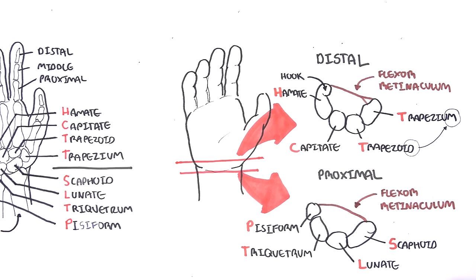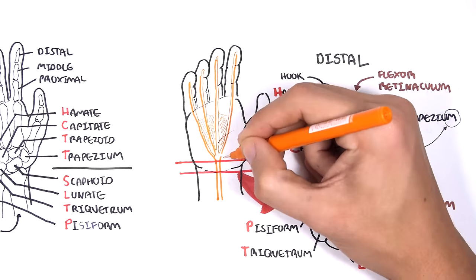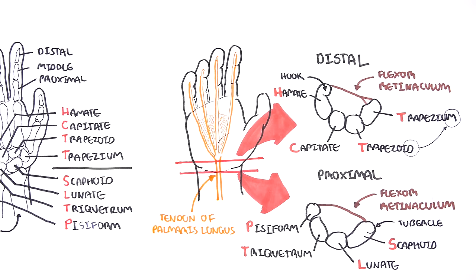Let's have a closer look and stick with the right hand for now. Before going on, I want to introduce a tendon that runs over your flexor retinaculum called the tendon of palmaris longus. This is the big tendon you can see in the middle of your wrist. This tendon originates essentially from the medial epicondyle and is responsible for flexing the wrist. It is innervated by the median nerve.